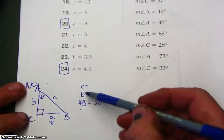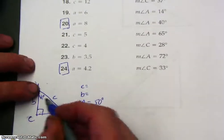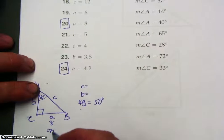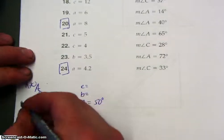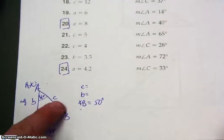So to find side C or side B, we're given angle A, so that means this is opposite, and this is adjacent. So it depends on what you want to find first. You want to find B or find C.